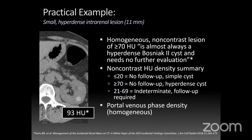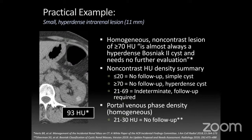What about portal venous phase density if you only have a routine CT abdomen and pelvis? Based on the revised Bosniak criteria, if a homogeneous lesion measures 21 to 30 HU on portal venous phase, you can assume it's a benign cyst and not follow it up. The reasoning: if a cyst is about 20 on non-contrast and goes up to around 30, that's within normal range considering pseudo-enhancement. This is a newer guideline helpful for lesions measuring around 26 HU on routine CT where you'd otherwise be uncertain.